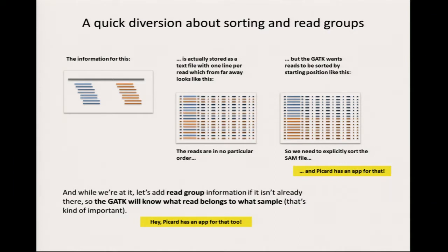By default, when you align to a reference — for example, when you run BWA — BWA will output your aligned reads in the same order as your input FASTQ. It's not going to sort for you by default. FASTQ files, which are just read records, are ordered alphabetically by read name, and your SAM file is going to have essentially the same ordering. It's actually not convenient to have such an ordering — the more convenient ordering for all downstream processing is to have your BAM file sorted by the start position of your reads in the reference.